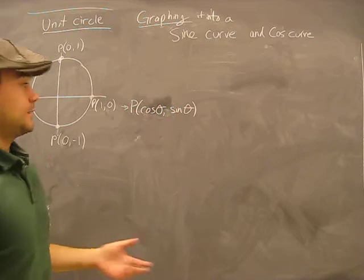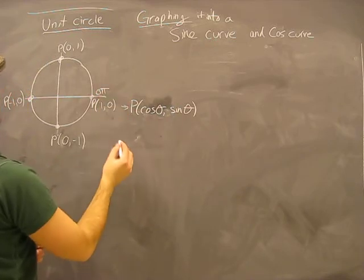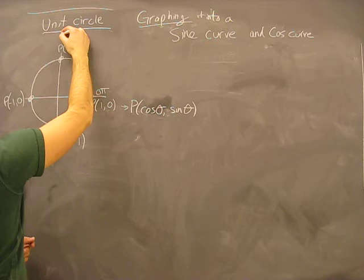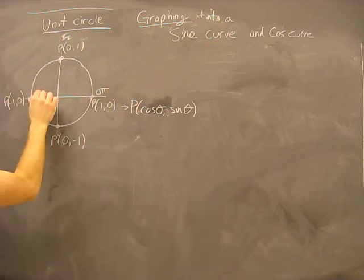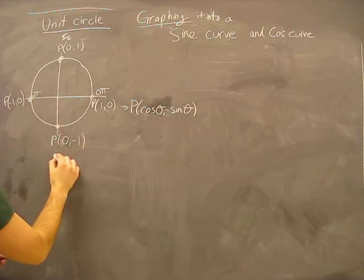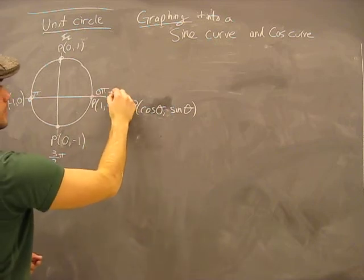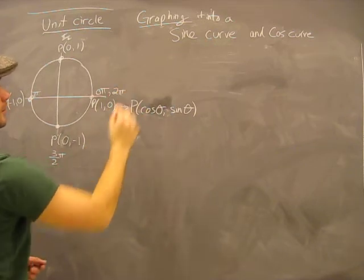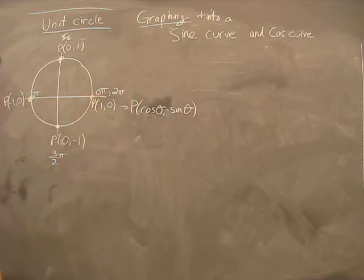What do we know about radians? This here is zero pi, this here is pi over two, this here is pi, this here is three pi over two, and this is two pi — and also four pi, six pi, eight pi as you keep going around.